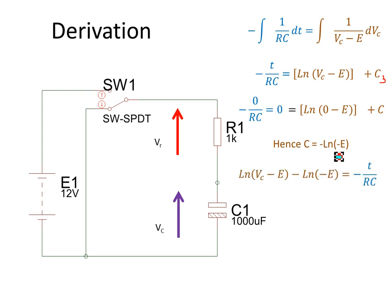Putting that back into the equation, I can see that the natural log of Vc minus E minus the natural log of minus E is equal to minus t over RC.